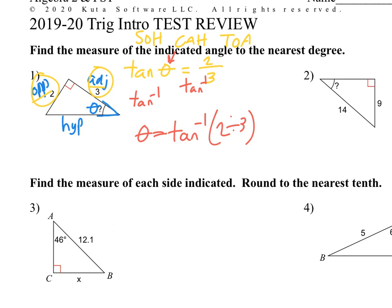Let me just verify this on my calculator. That one should be 33-point-something — they want the nearest degree — so 33.7, which rounds to 34 degrees.